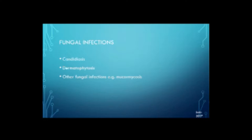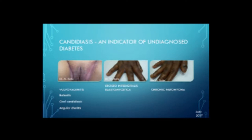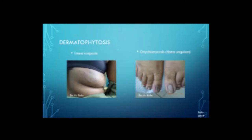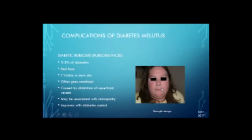Fungal infections — the common ones are candidiasis, dermatophytosis, and other fungal infections such as mucormycosis. Candidiasis can present as vulvovaginitis, balanitis, oral candidiasis, and angular cheilitis, where candida affects the corners of the mouth. You can also get an erosive infection between the finger webs — erosio interdigitalis blastomycetica — or chronic paronychia around the nail folds, especially in persons who put their hands in water frequently. Dermatophytosis is common, especially on the feet, in the groin, on the body as tinea corporis, and involving the nails as onychomycosis.